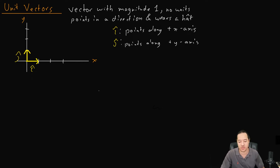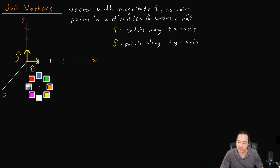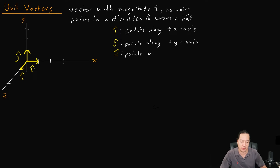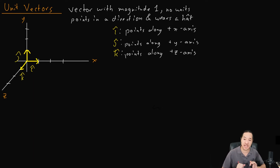Now if we're thinking three-dimensionally, which we should, then we can also look at the z-axis. Let me draw the z-axis — so let's say that is the z-axis. We could also draw a unit vector on the z-axis: here's one, here's two, here's three. The unit vector in the z-axis we call k-hat. So k-hat is going to point along the positive z-axis. So i, j, k — these are our three unit vectors for our three different axes in three dimensions.